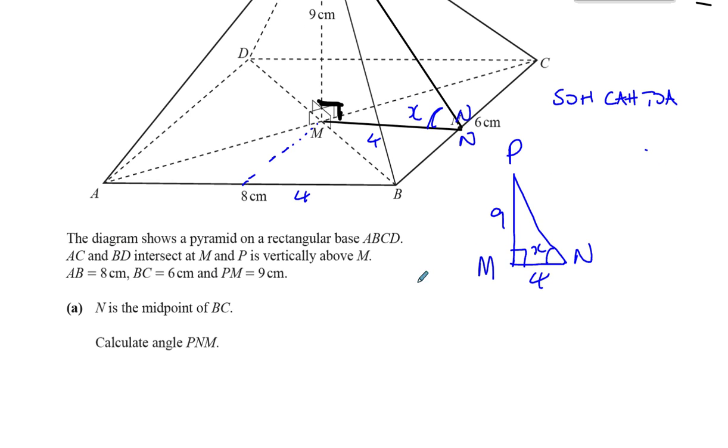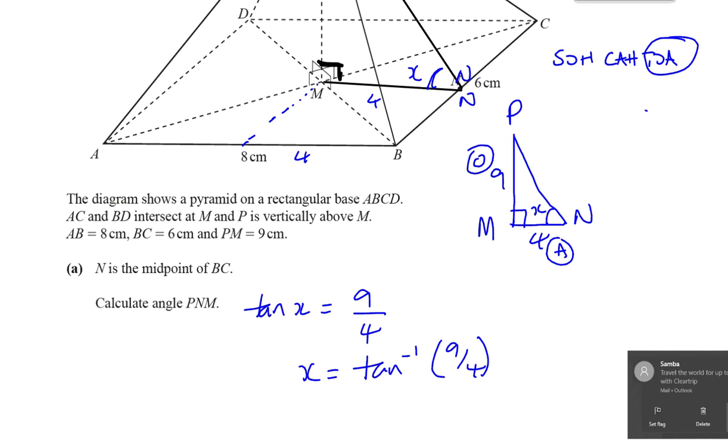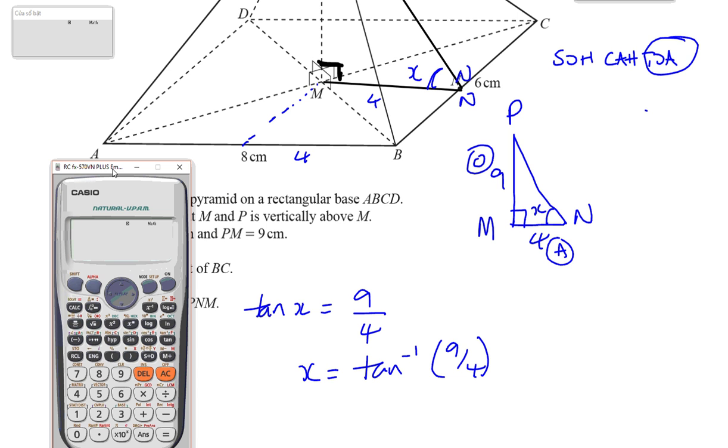So that's enough for us to be able to calculate PNM. We know that the angle PNM, this is opposite and this is adjacent. So we're going to use a tangent ratio. The tangent of the angle X is equal to the opposite over the adjacent. So X is going to be inverse tan of 9 over 4. Here we can use the calculator. The calculator can say inverse of tan, fraction 9 over 4, 9 divided by 4, close bracket, equals.